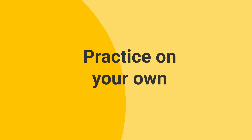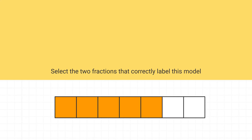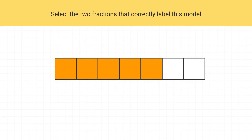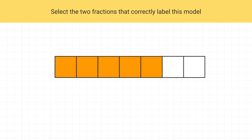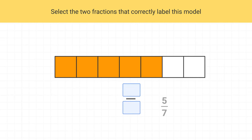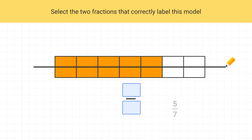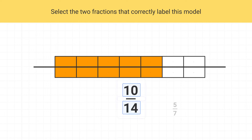Now it's time for you to practice some of these on your own. Select the two fractions that correctly label this model. Well, the first fraction is just what we see right now — this model is showing the fraction five-sevenths. The next fraction will be the equivalent one. If we break each piece of the model into two smaller pieces, we've made an equivalent fraction. Now ten pieces are shaded out of a total of fourteen, so it's the fraction ten-fourteenths.